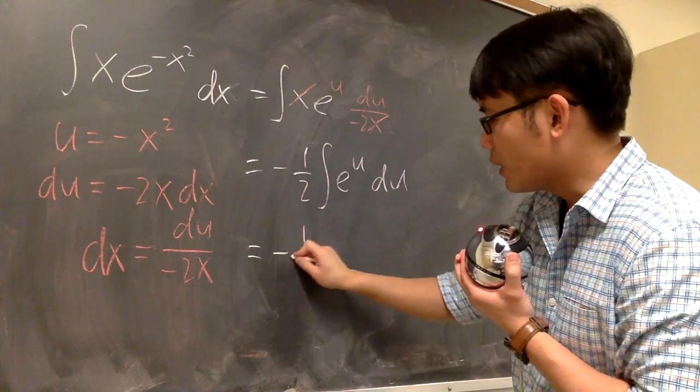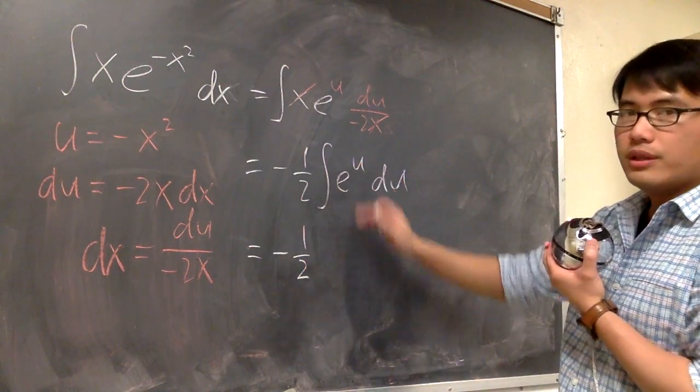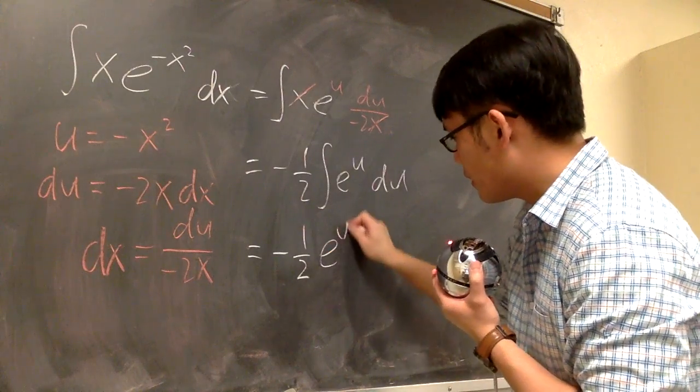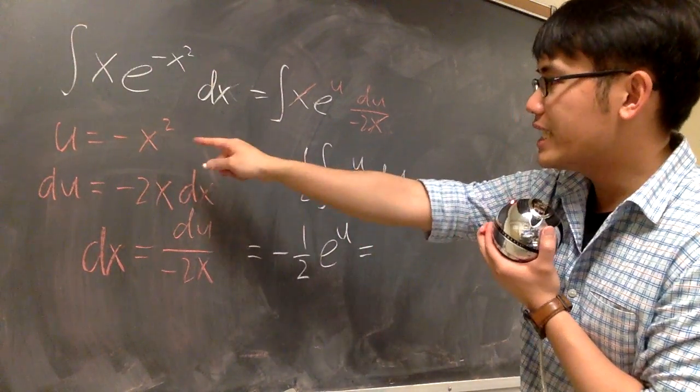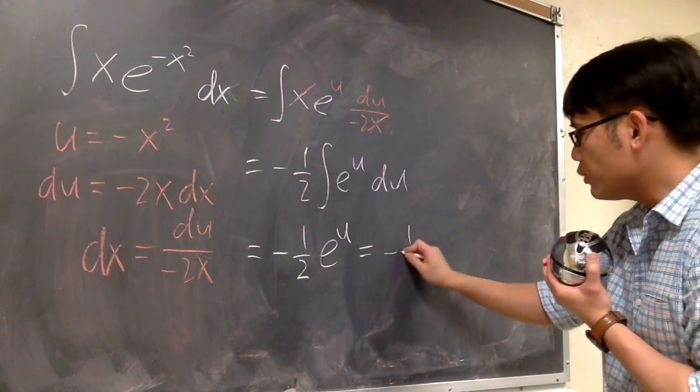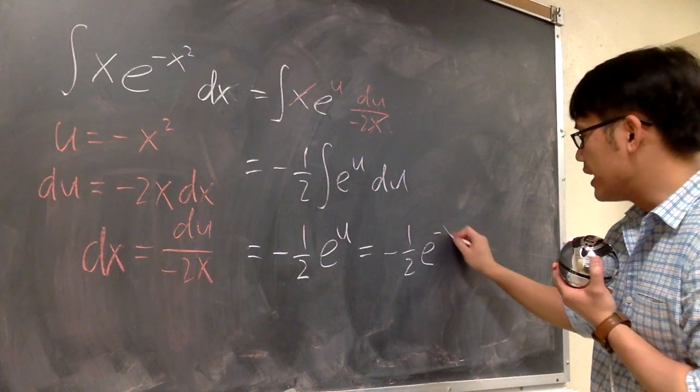Well, the negative 1 half stays right here. And the integral of e to the u is just e to the u. But then u is negative x squared, so this is negative 1 half e to the negative x squared.